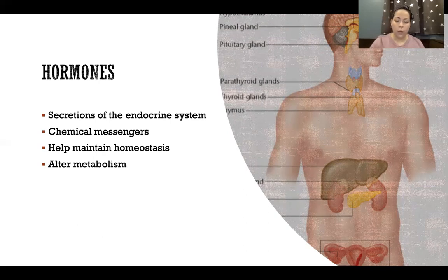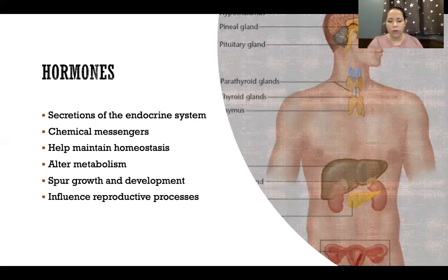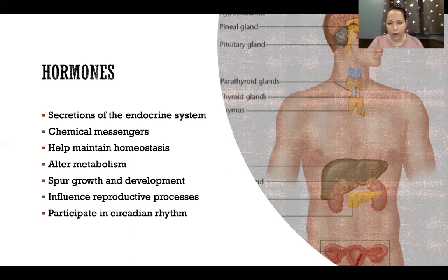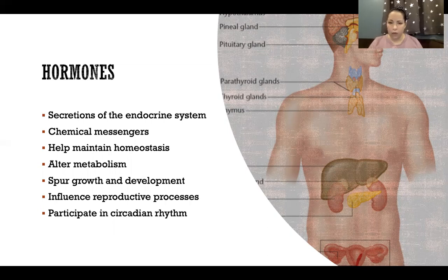Hormones help us maintain homeostasis alongside the nervous system. They help alter metabolism, spur growth and development, influence reproductive processes, and participate in circadian rhythm. There are many, many functions of the body that are all regulated and controlled via hormones, and all of those are facets of maintaining homeostasis.